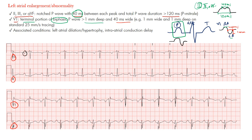Notice here are our P waves. If you look closely, you'll see they are at least one small box wide and one deep. Altogether, this patient did have left atrial enlargement. In lead II of this patient's tracing, there's some notching — look at this P wave, little notching there — about 40 milliseconds or one small box and just making about three small boxes wide. You can see that in other P waves as well.